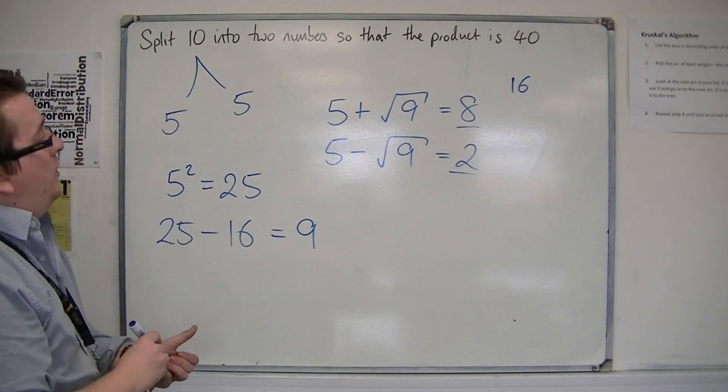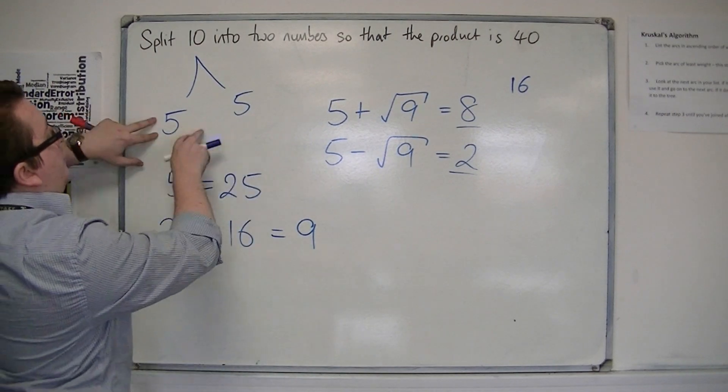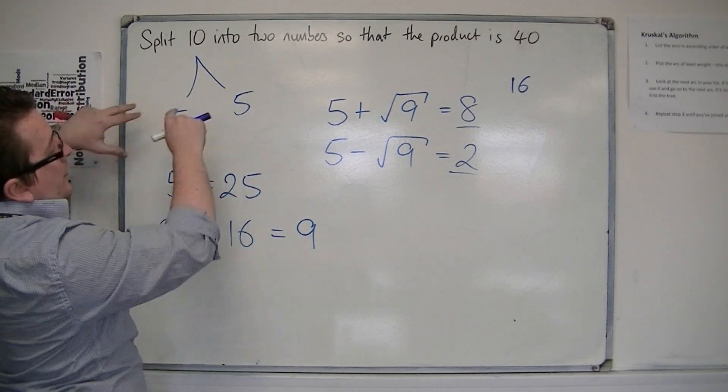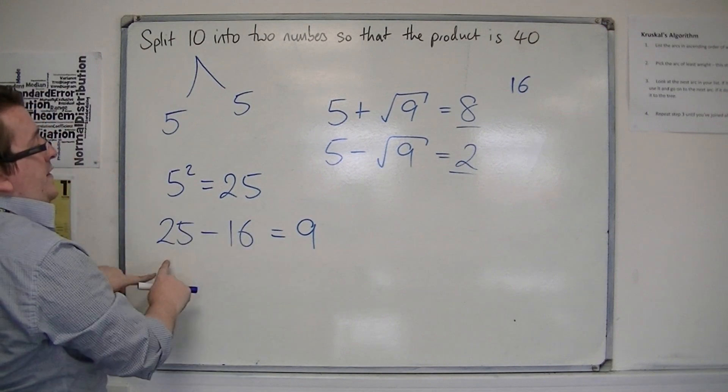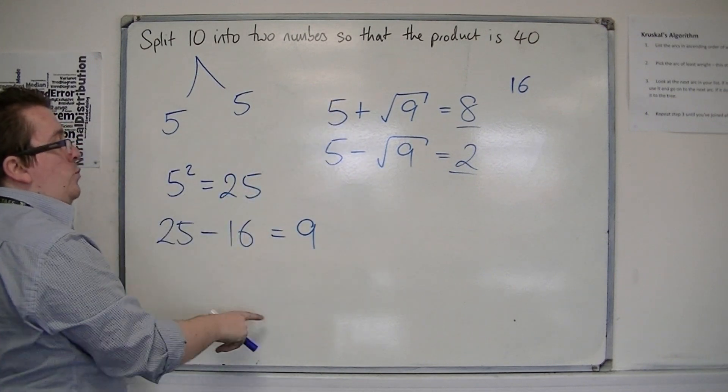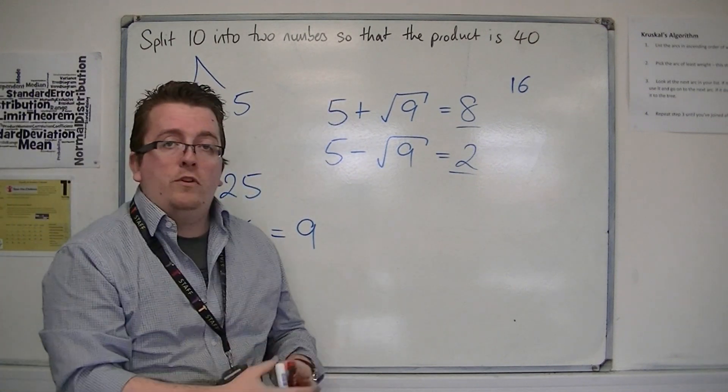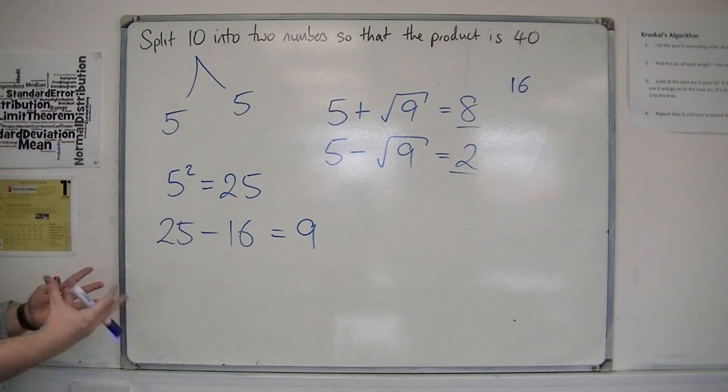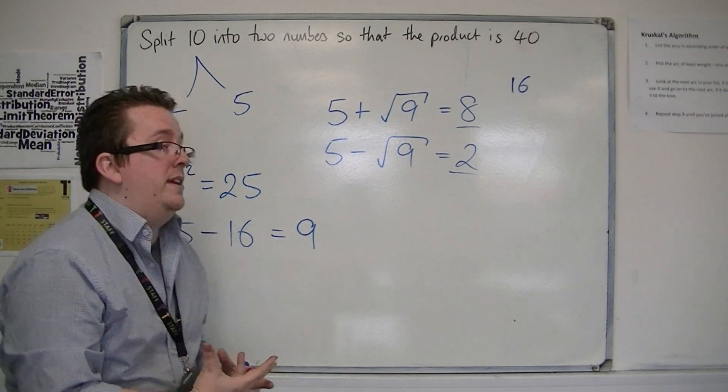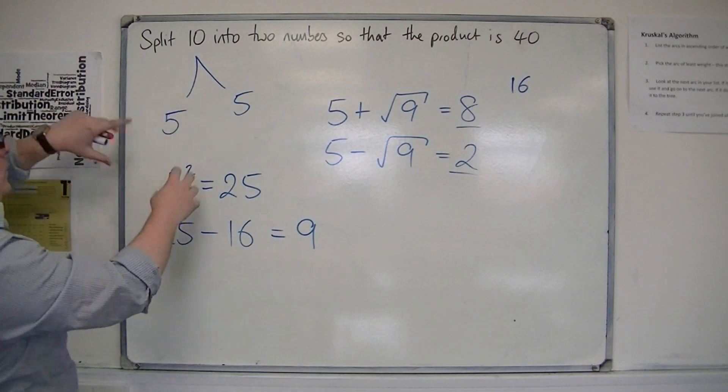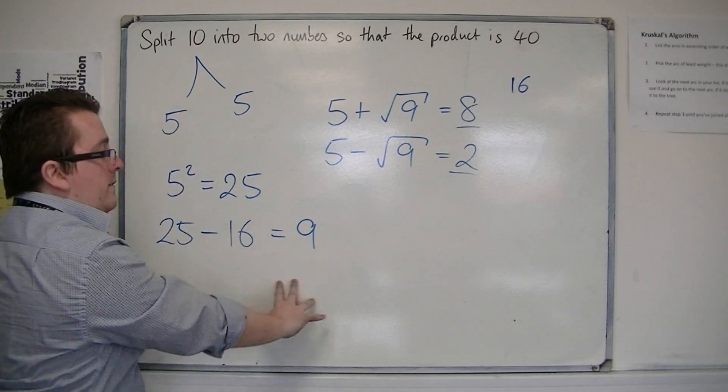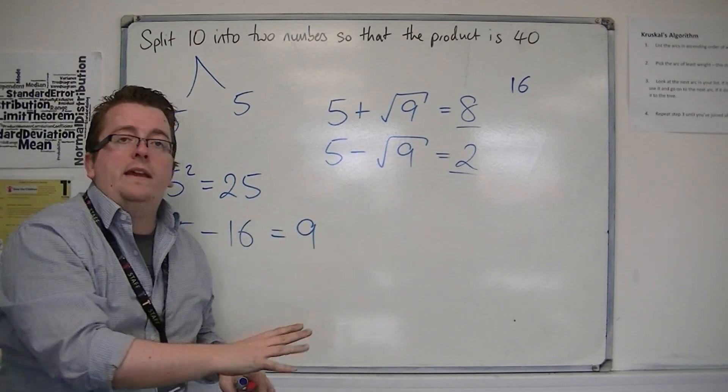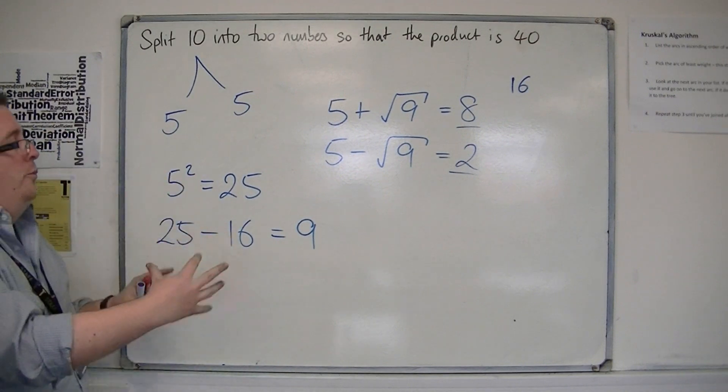You can see that this method of dividing 10 into two parts, squaring your answer, and then taking away the product that you want and square rooting, that's what you're going to need to find. So what we're actually doing is b squared minus 4ac. We're doing part of the quadratic formula here, but that's kind of like what's working in the background.